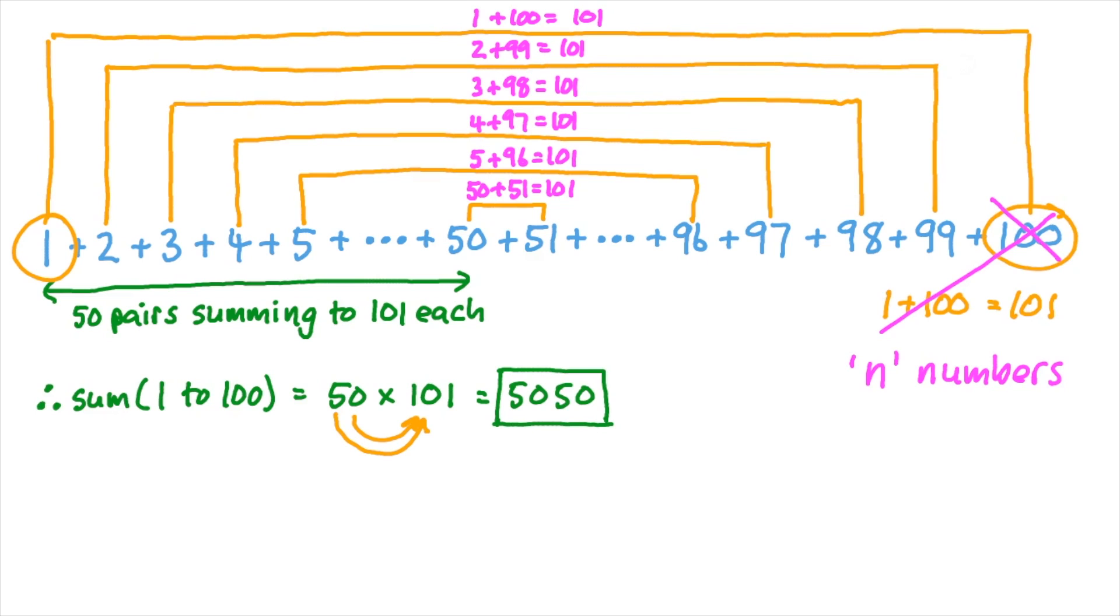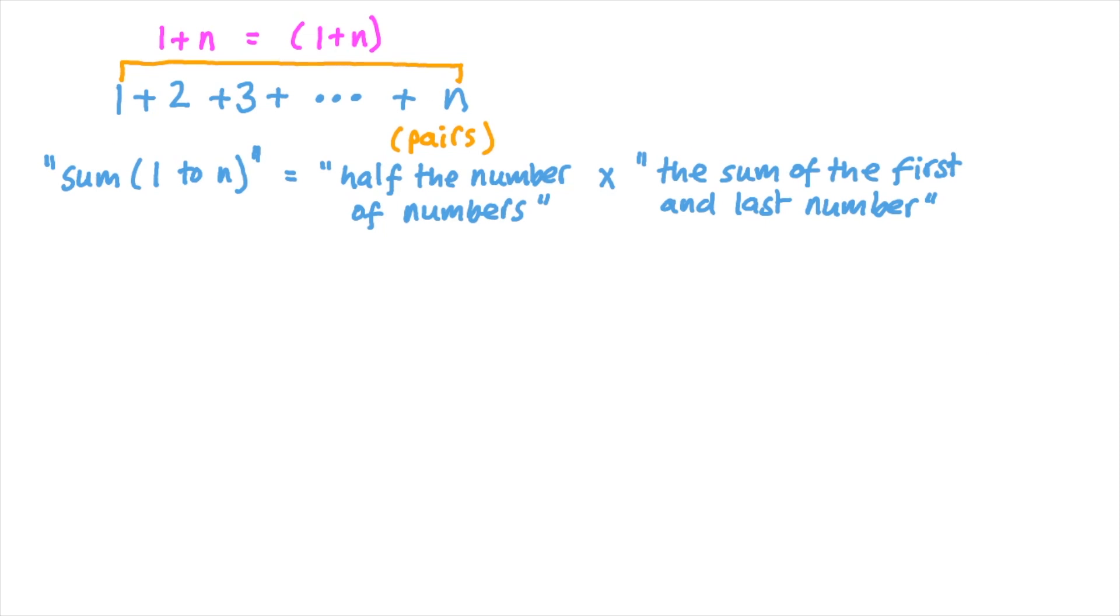So if we generalize and say we've got n numbers rather than specifically 100 numbers, then we can write out our method mathematically. In words, we've got the sum of the numbers from 1 to n is equal to half the number of numbers—so that's the number of pairs—times the sum of the first and the last number. Let's call that sum S, and the number of numbers is n, so half the number of numbers is n over 2, and we're multiplying that by the sum of the first and the last number—that's 1, the first number, plus n, the last number, whatever that happens to be. Then the general formula is that the sum S is equal to n over 2 times 1 plus n.